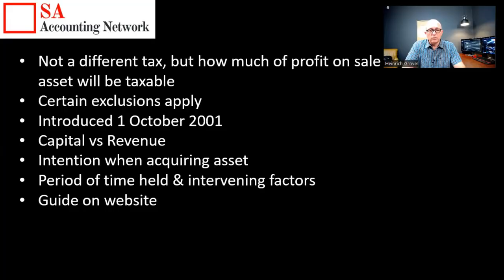But if you buy a property — or it can be anything else, whether it's gold coins, shares, or anything like that — for an investment that you're going to keep for a very long time for capital appreciation, then you're going to be able to use the lower capital gains tax rates. The period of time and intervening factors are also really important. If you buy a property and sell it six months later, you're going to battle to argue with the receiver of revenue that it was capital in nature.